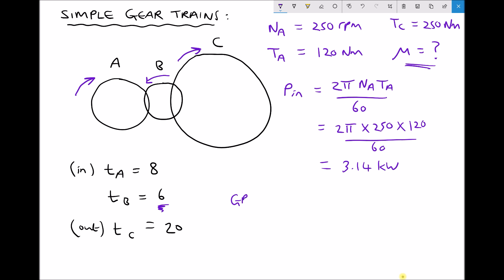So gear ratio is the teeth on the output over the teeth on the input. So 20 over 8 which is 2.5.